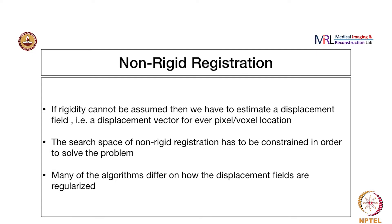If rigidity cannot be assumed, then the most general non-rigid registration transformation is basically the estimation of a deformation field or a displacement field. This is the estimation of a displacement vector — because you need components in x, y, and z directions — for every pixel in the image, or in some cases for a set of control points. You choose a bunch of pixels as control points and estimate the displacement for those pixels.